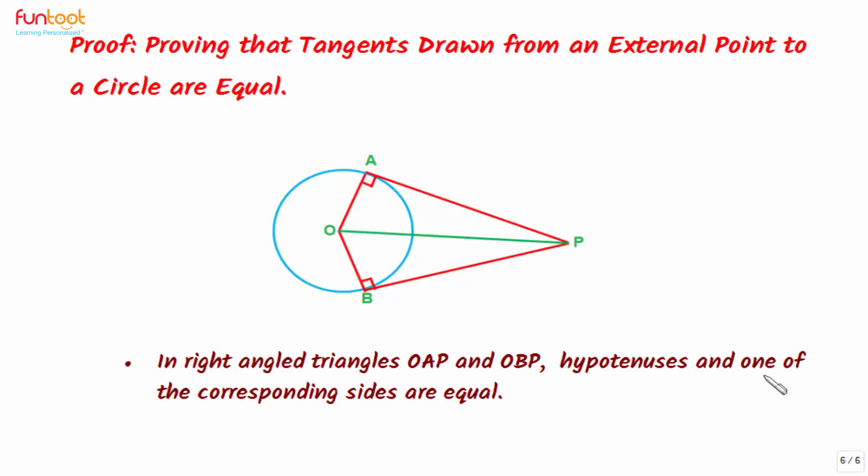Let's summarize how we have solved this problem. In right-angled triangles OAP and OBP, hypotenuses and one of the corresponding sides are equal. Then, in triangles OAP and OBP, we prove them congruent by using RHS congruency rule, and from CPCT it follows that PA is equal to PB.